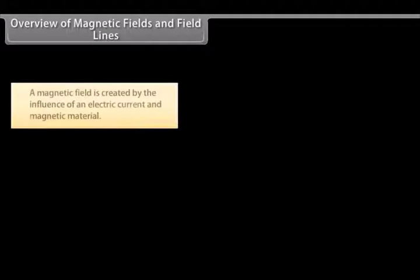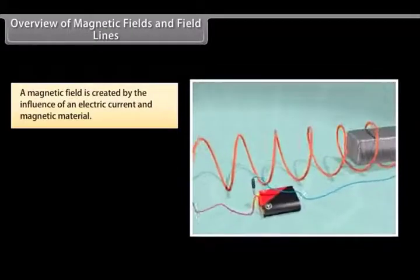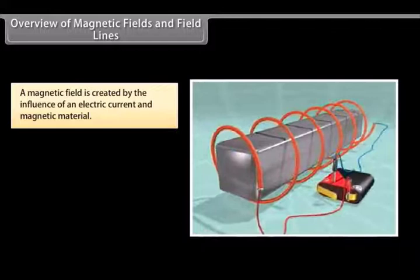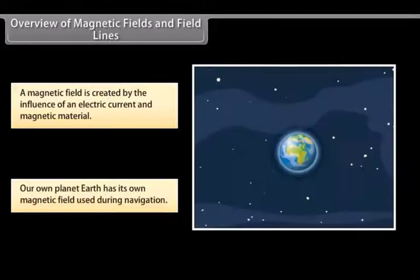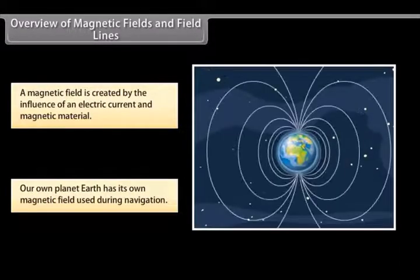Overview of magnetic fields and field lines. A magnetic field is created by the magnetic influence of an electric current and magnetic material. Our planet Earth produces its own magnetic field, which is an important factor during navigation.